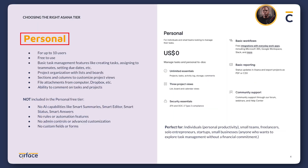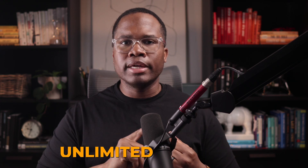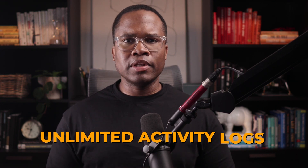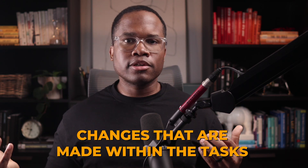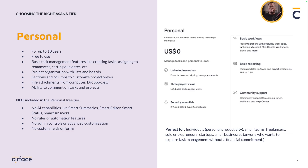The first option is the free Personal plan, ideal for individuals and small teams as long as you're not going over 10 users. Some of the features you'll get are unlimited tasks, unlimited projects, messages, and activity logs. Within the tool details, you can see changes made within tasks, who's collaborating, and updates to descriptions or fields. You'll also get basic views: list, board, and calendar — all available on the free Personal plan.